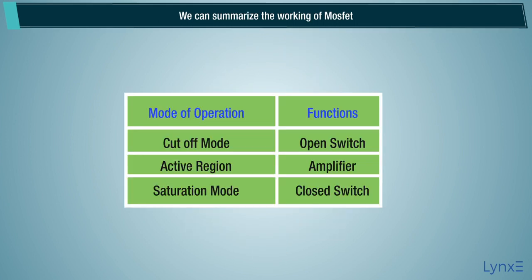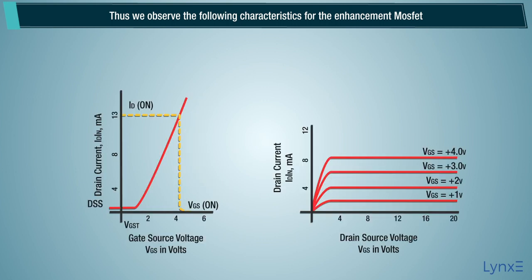We can summarize the working of MOSFET. When it is in the cut-off mode or saturation mode, it acts as a switch, and when it is in the active region, it acts as an amplifier. Thus we observe the following characteristics for the enhancement MOSFET.